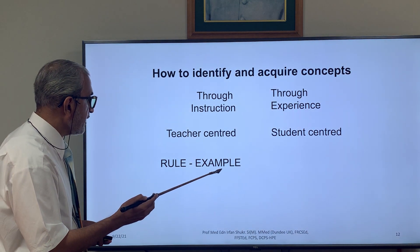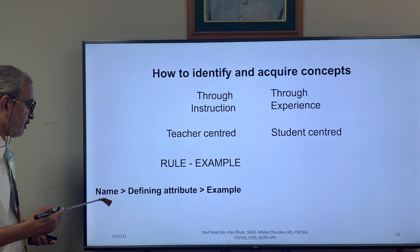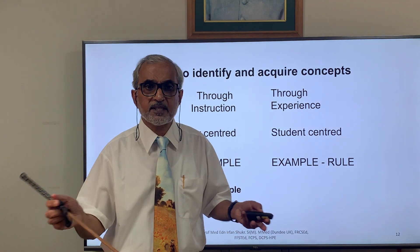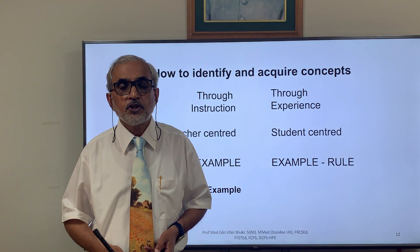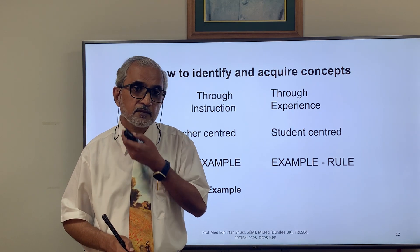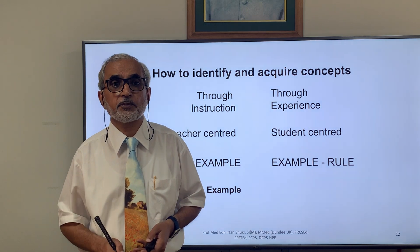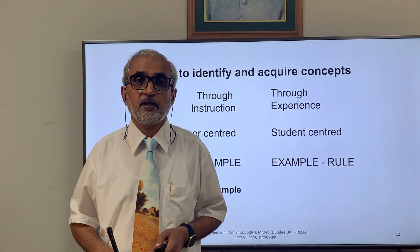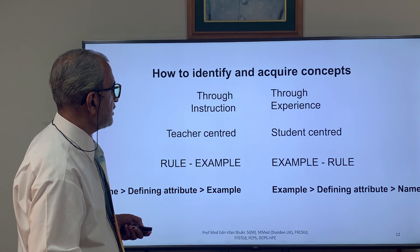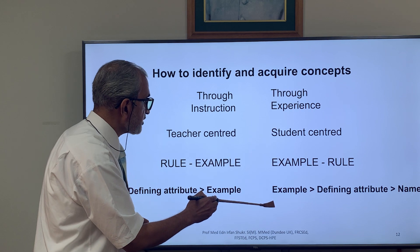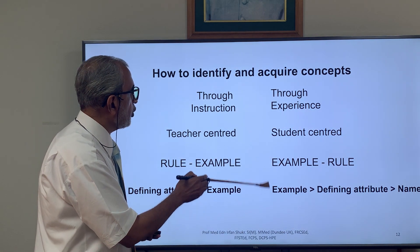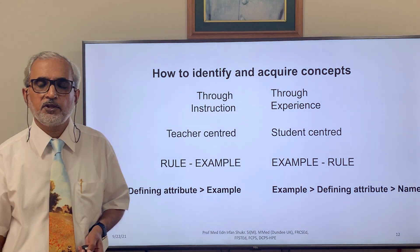The teacher-centered approach uses a rule-example strategy: the teacher first tells the defining attributes, then the rules, then gives examples. This can also be reversed as an example-rule strategy, where students are shown examples first and asked to find similarities, which become the defining attributes, after which the concept name is told. This example-defining-attributes-name sequence is a better approach for more mature students, while direct instruction may suit younger learners.